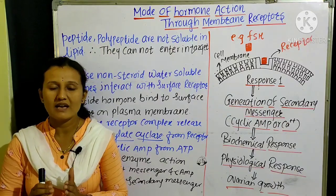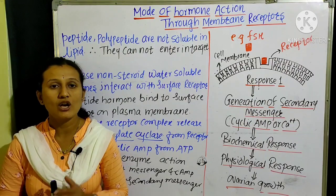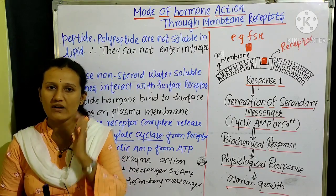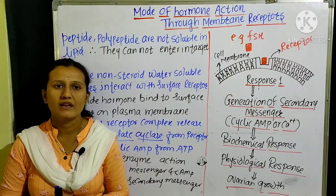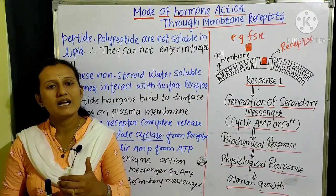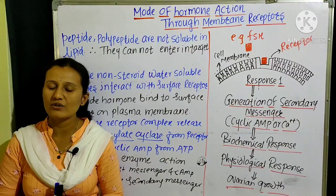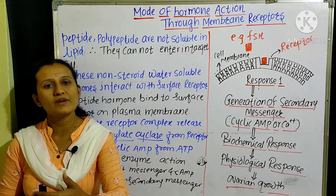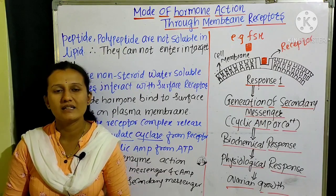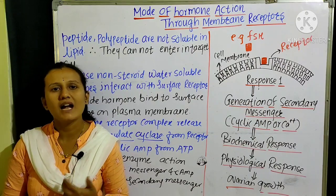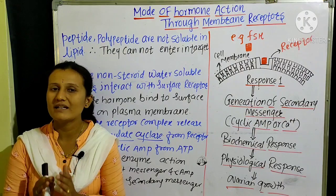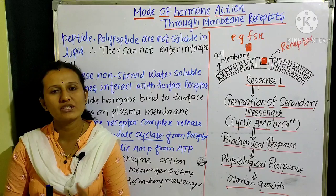Today we are going to discuss how hormones act through the membrane receptor. Some of the hormones act on the cell membrane, some act in the cytoplasm, and some target the nucleoplasm and genetic material. This is how hormones are acted upon the cell membrane, interacting with molecules that act as hormone receivers, which are called receptors.